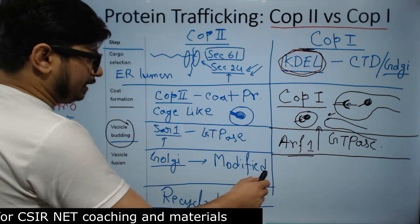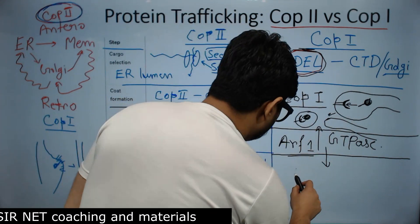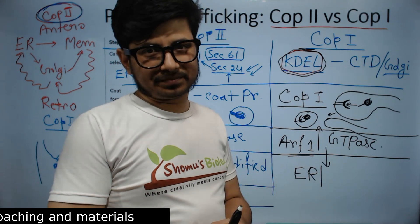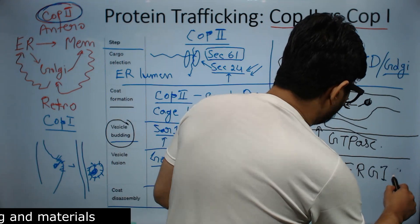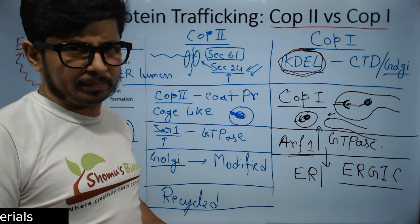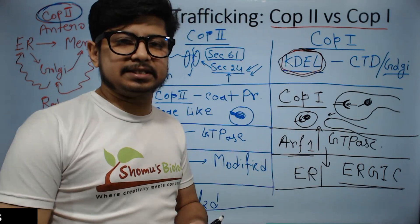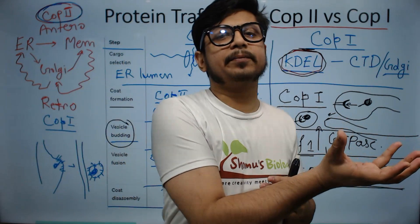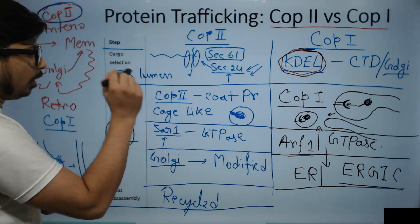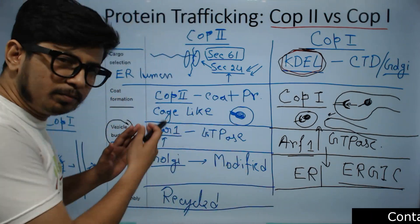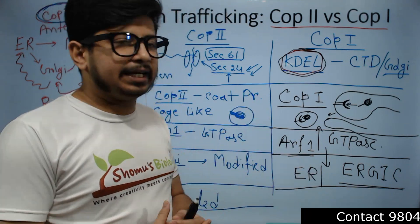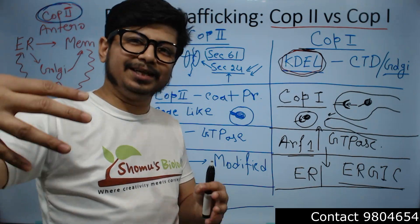Once the vesicle buds off, it moves from the Golgi apparatus to either the ER or to a location known as the ER-Golgi intermediate complex (ERGIC). Fusion occurs there, and the protein is transported back to the ER. So in the COP2 pathway, protein produced in the cytosol is transported through the ER lumen to the Golgi and finally toward the membrane, while in COP1, the protein with KDEL signal is retained and moves in reverse from Golgi back to the ER.